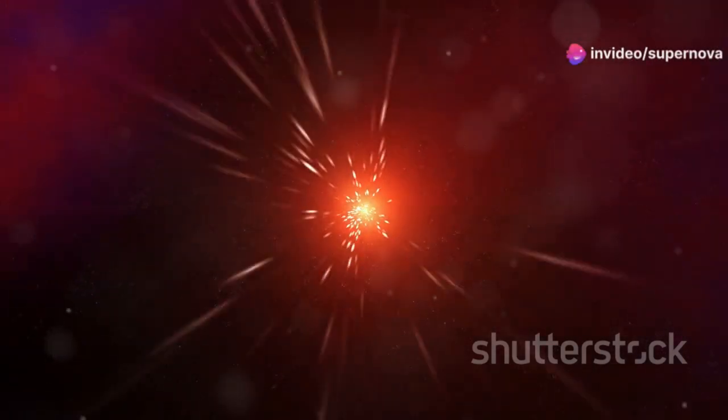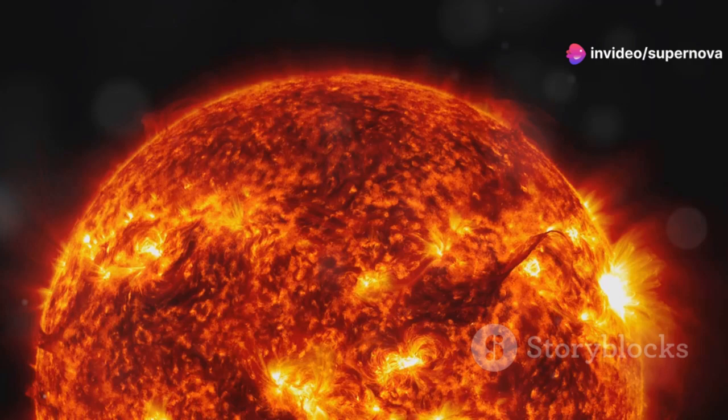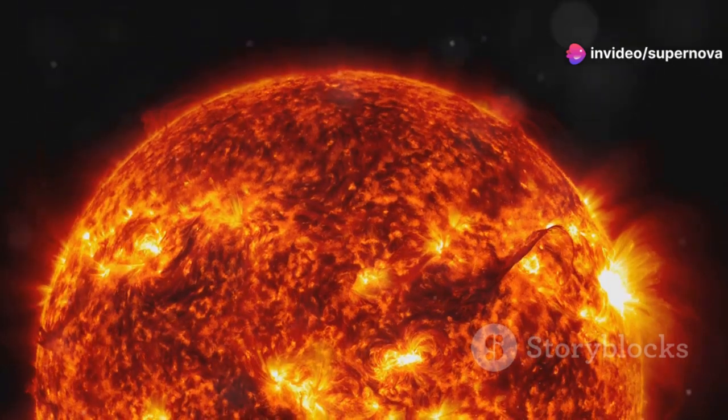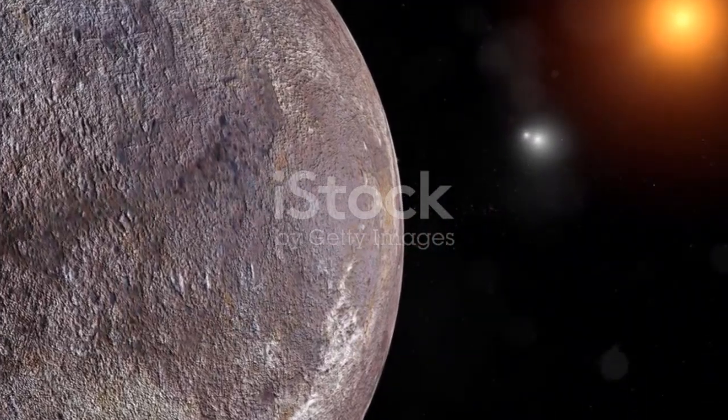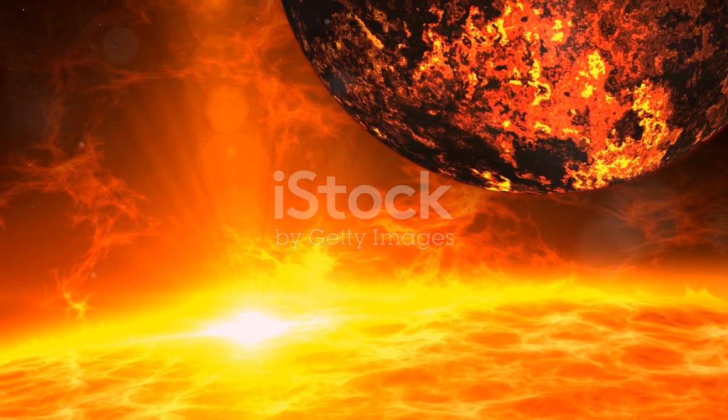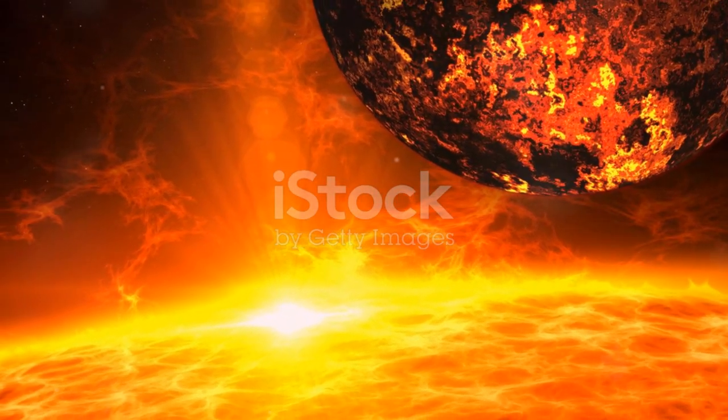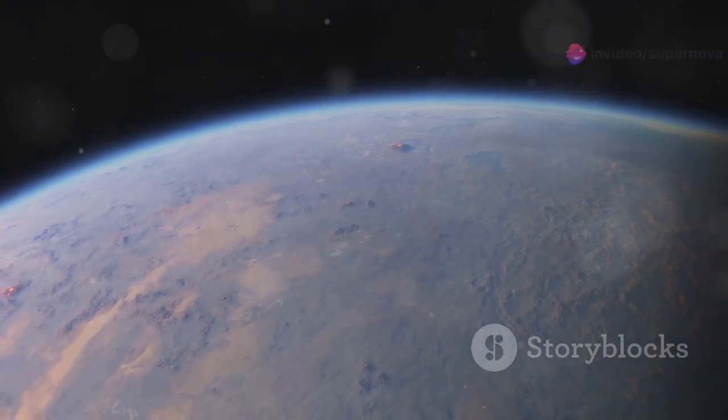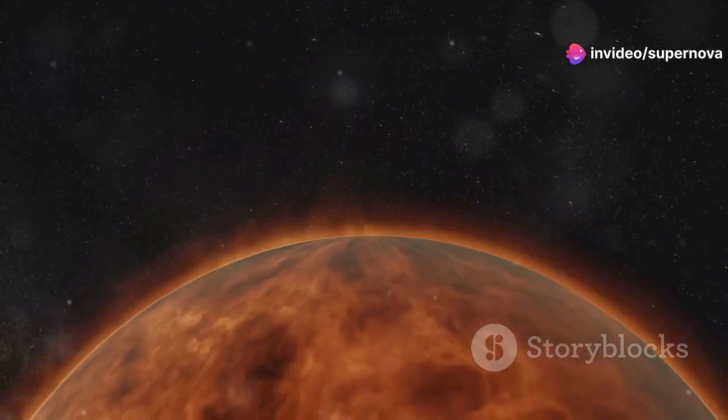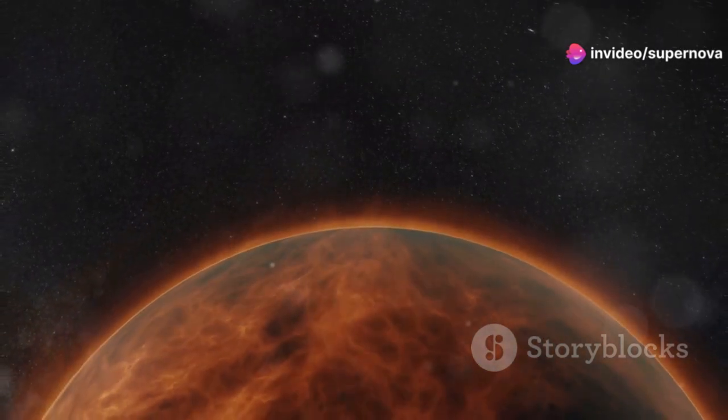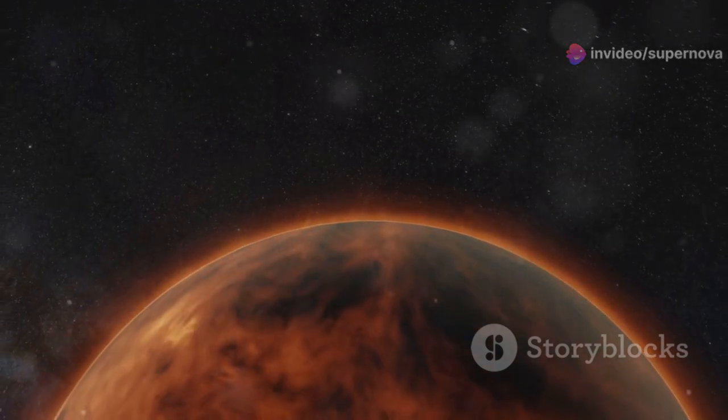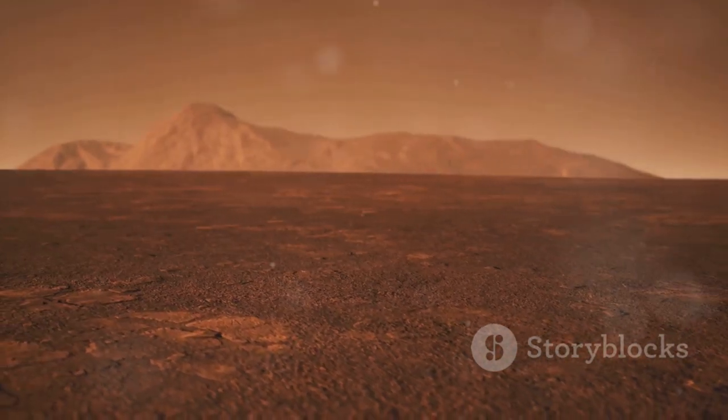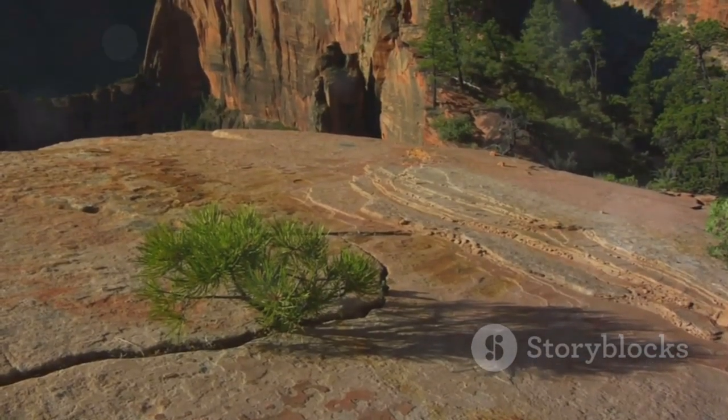Proxima Centauri is what astronomers call a flare star. It can unleash sudden bursts of energy. These flares are much more powerful than anything our sun produces. They bathe Proxima b in intense radiation. These flares pose a significant challenge to the potential for life on Proxima b. They can strip away a planet's atmosphere and boil away any surface water. Imagine being on a planet constantly bombarded by intense bursts of energy. It wouldn't be a very hospitable place to live, but even with these challenges, there's still hope.